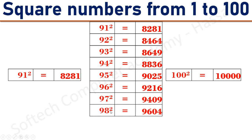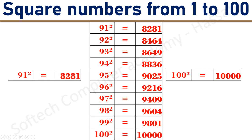98 square equals 9604. 99 square equals 9801. 100 square equals 10,000.